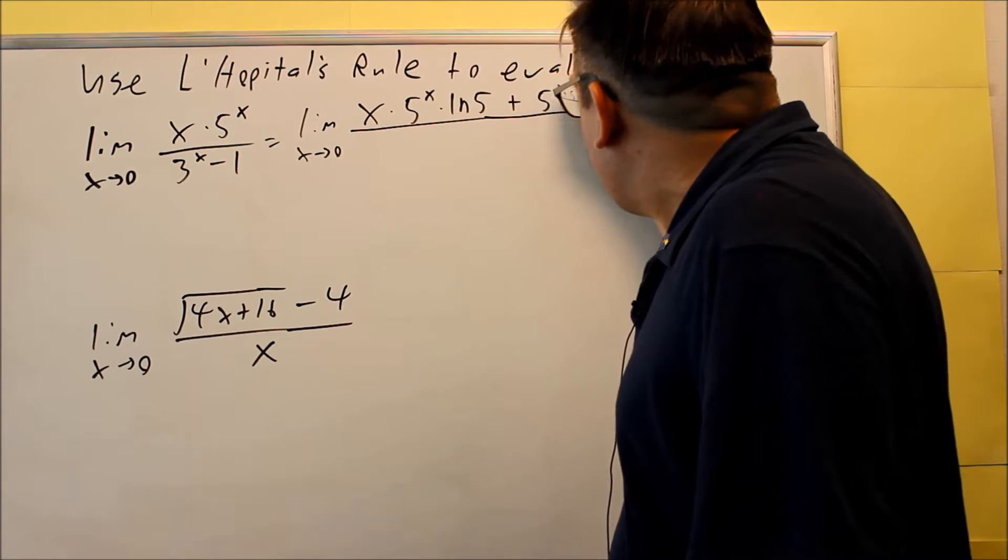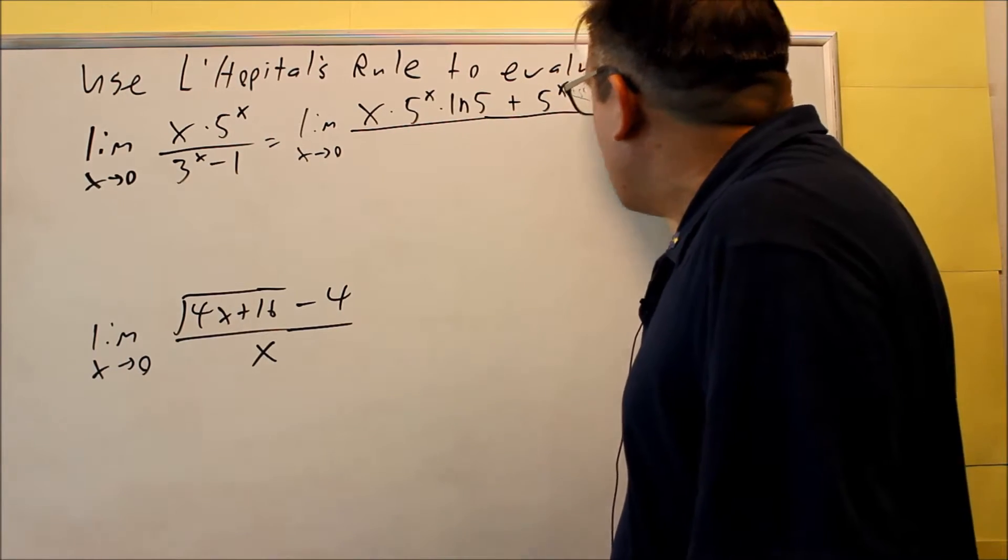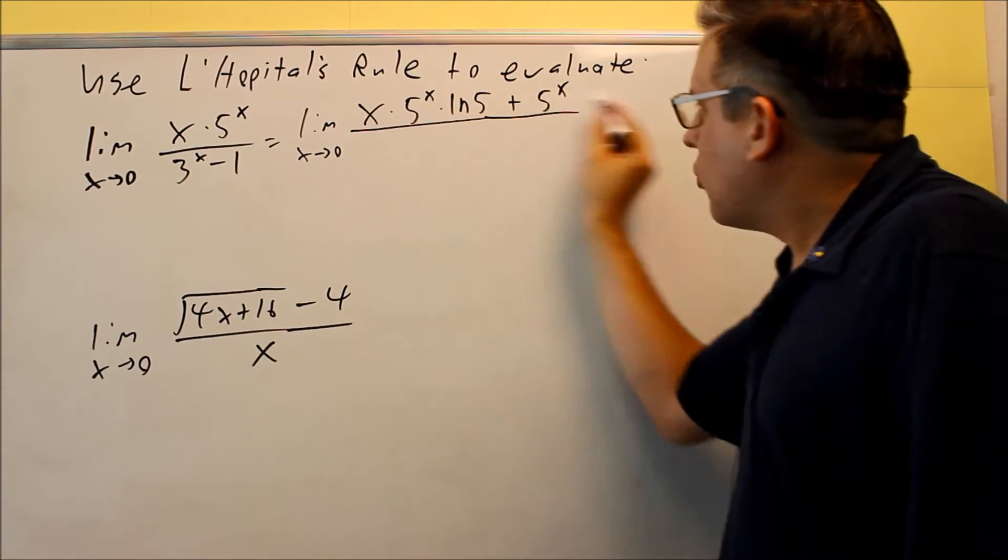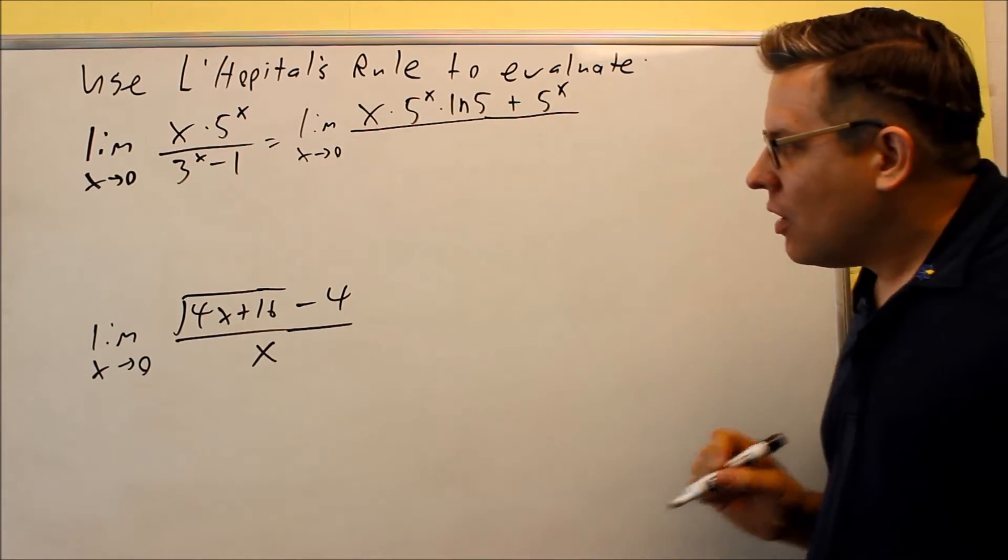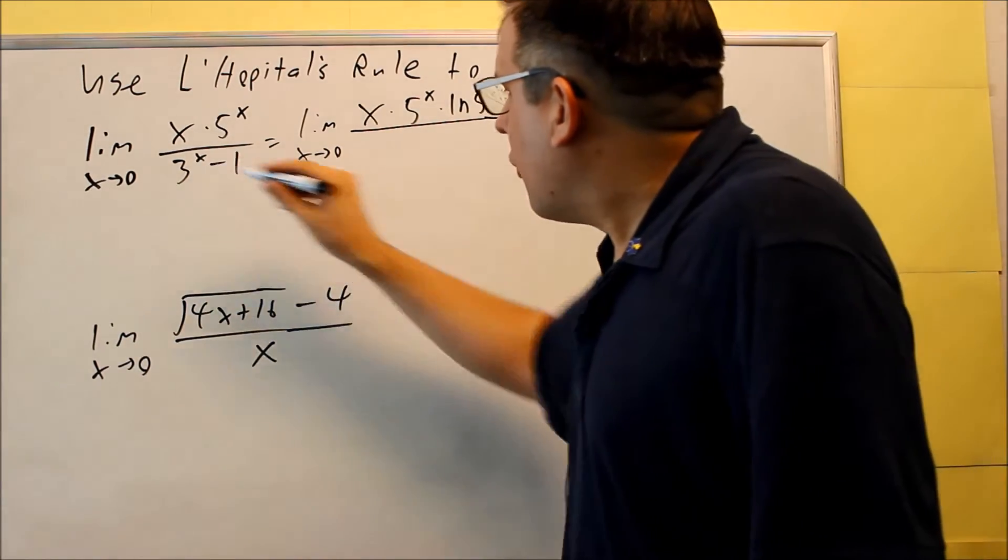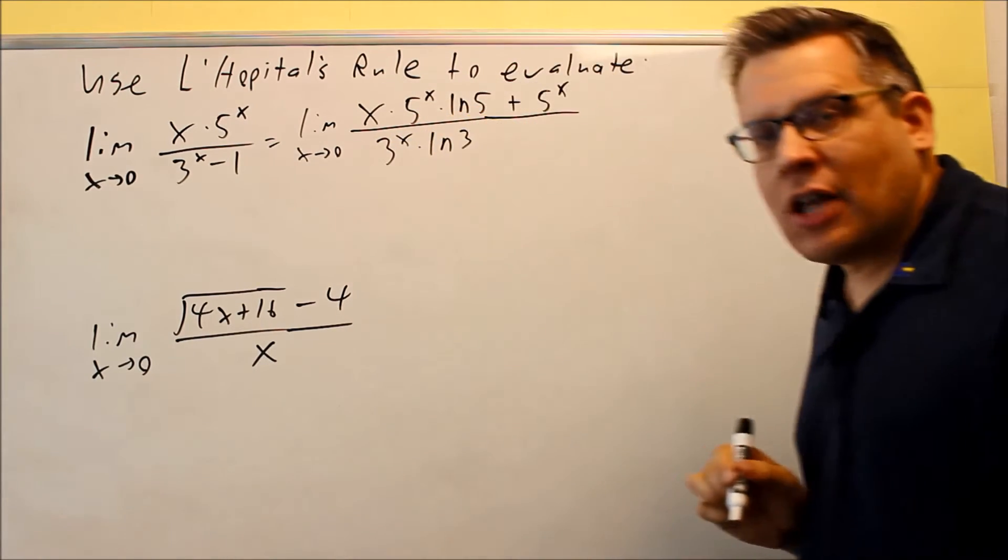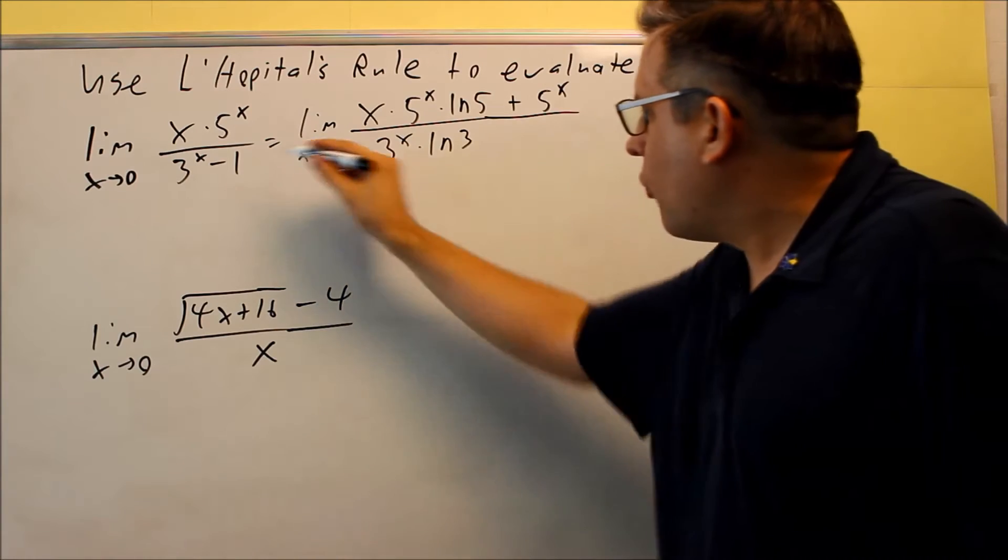Then we have plus the second piece: 5^x times the derivative of the first, which is 1. That completes the product rule for the top. On the bottom, the derivative of 3^x is 3^x times ln(3), and the derivative of 1 is 0.